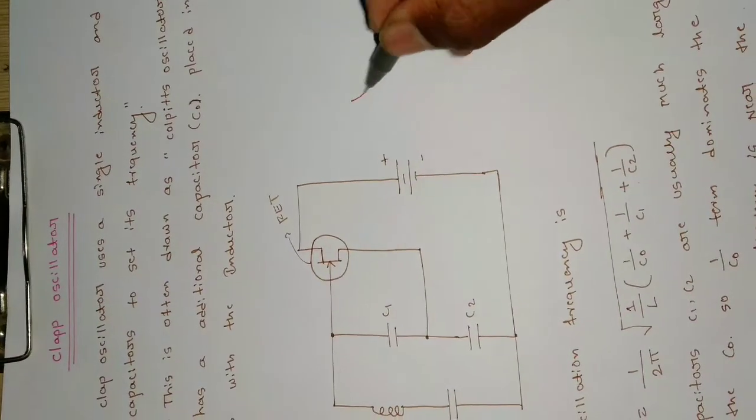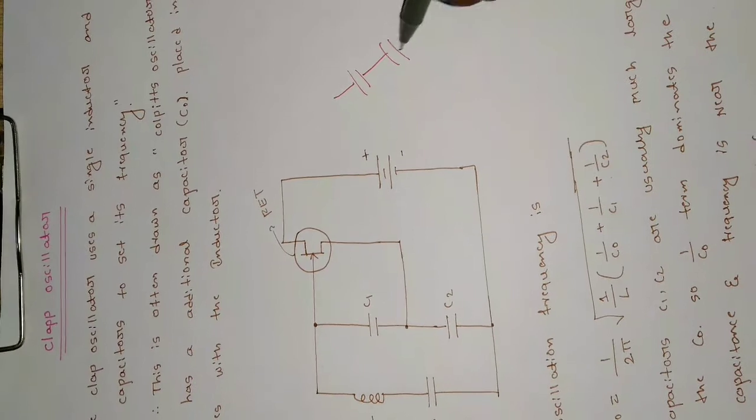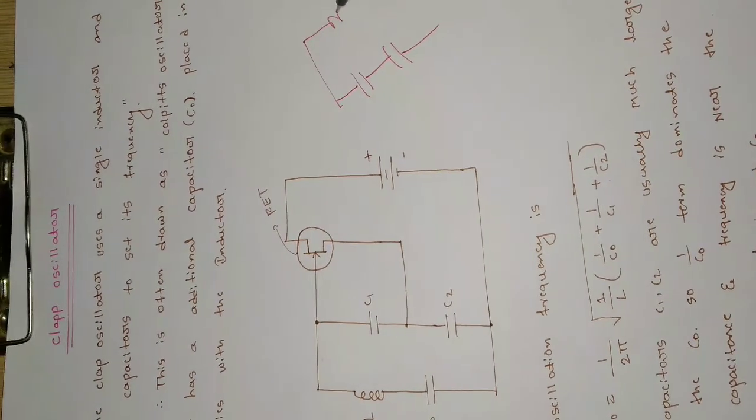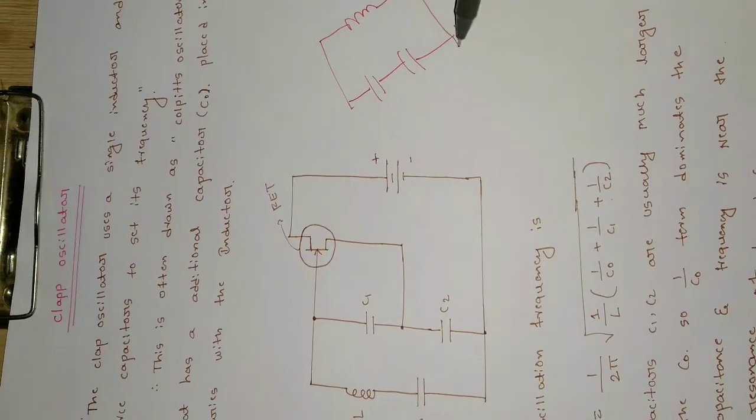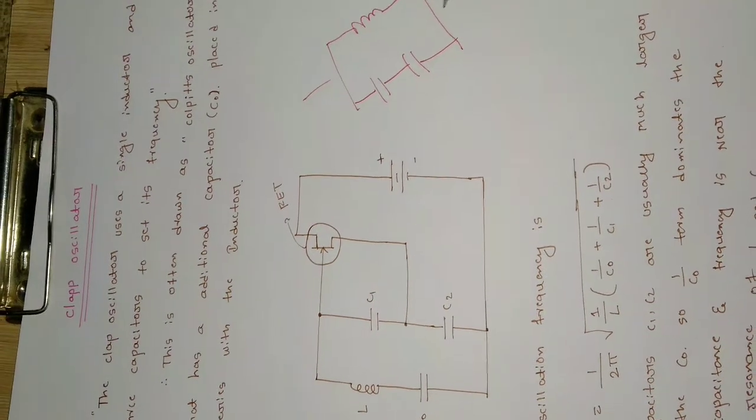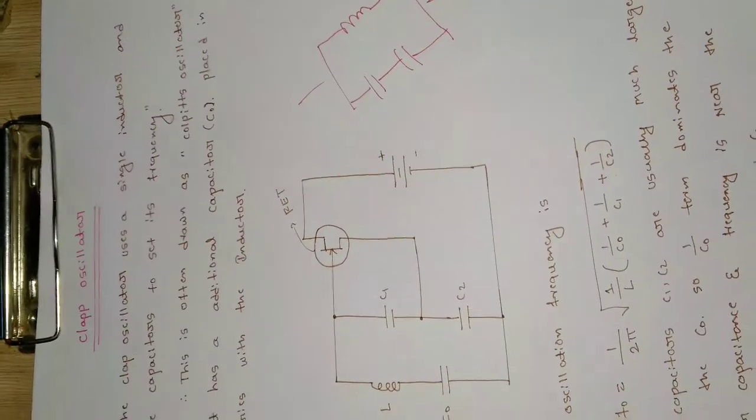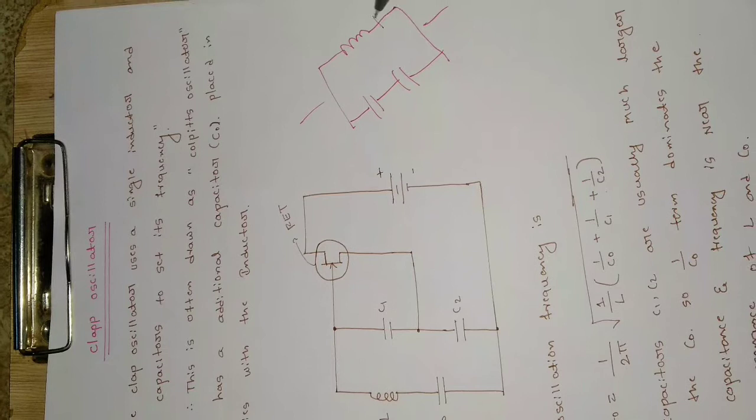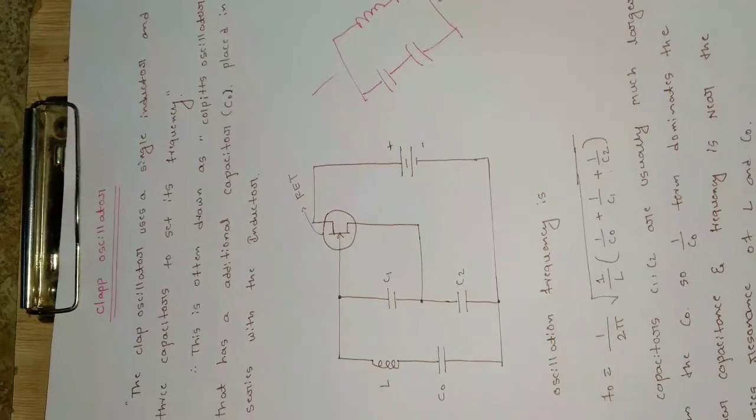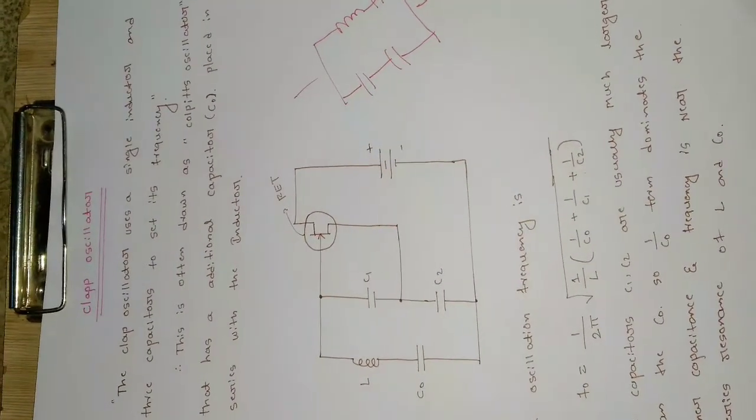For the Colpitts oscillator, two capacitors are connected in series and that series combination is connected in parallel with the inductor. The only difference is that C0 is added in the case of the clap oscillator to make the frequency stable.